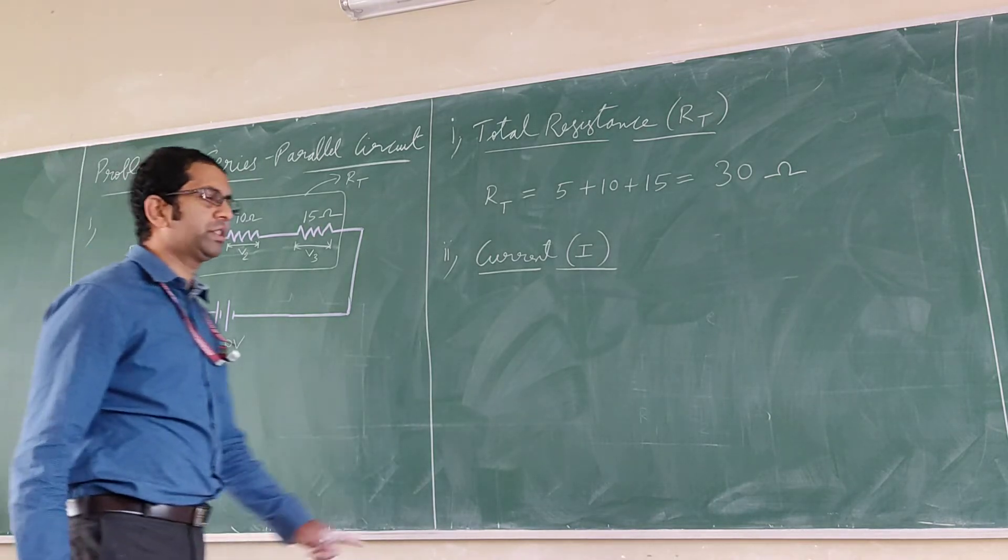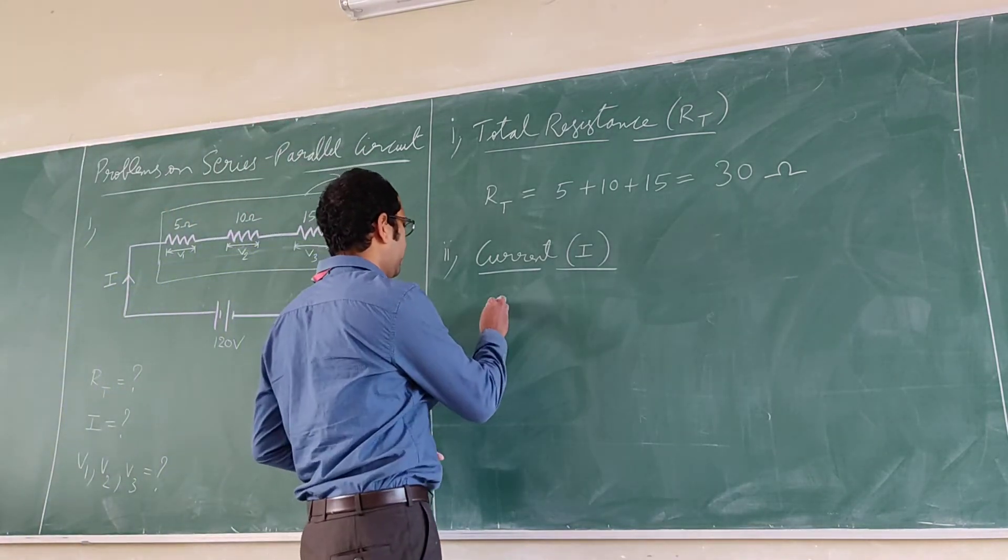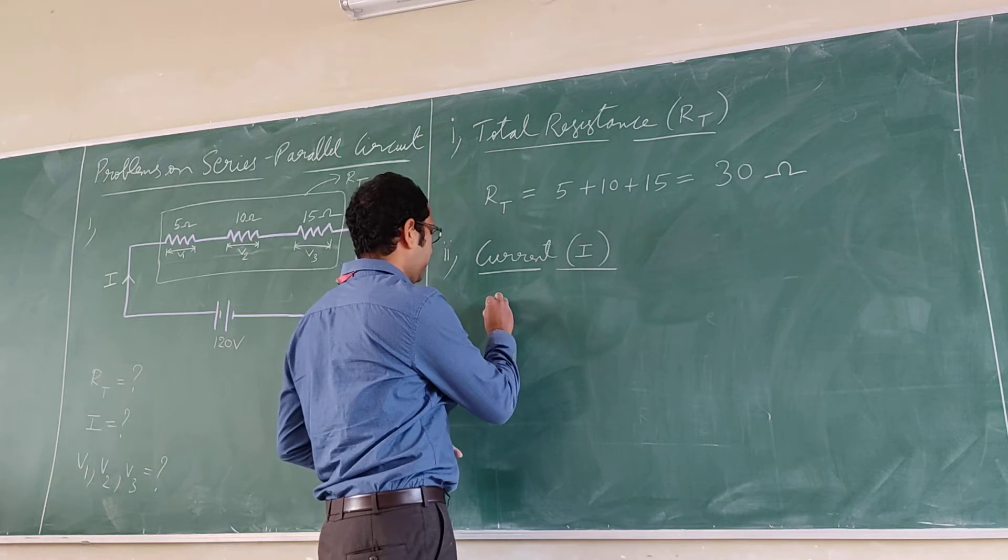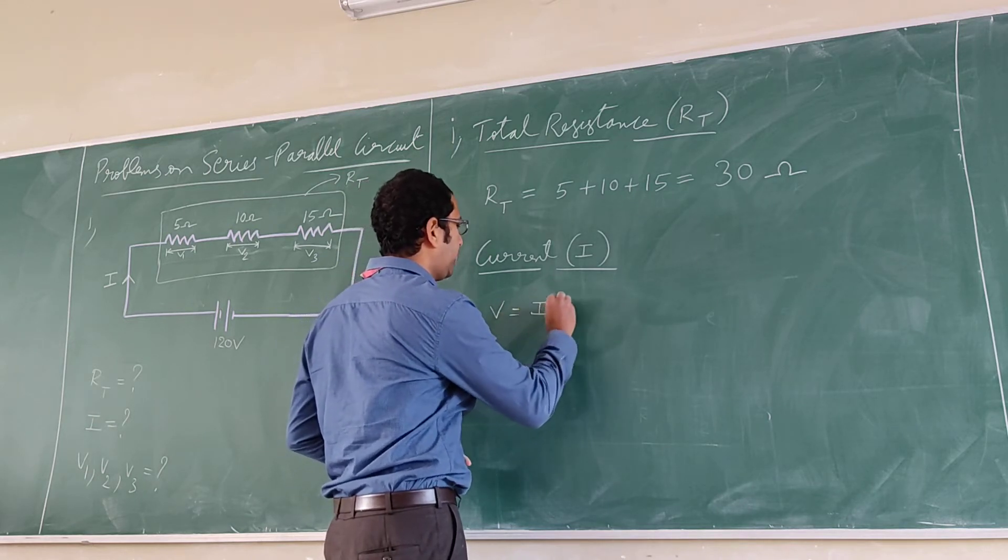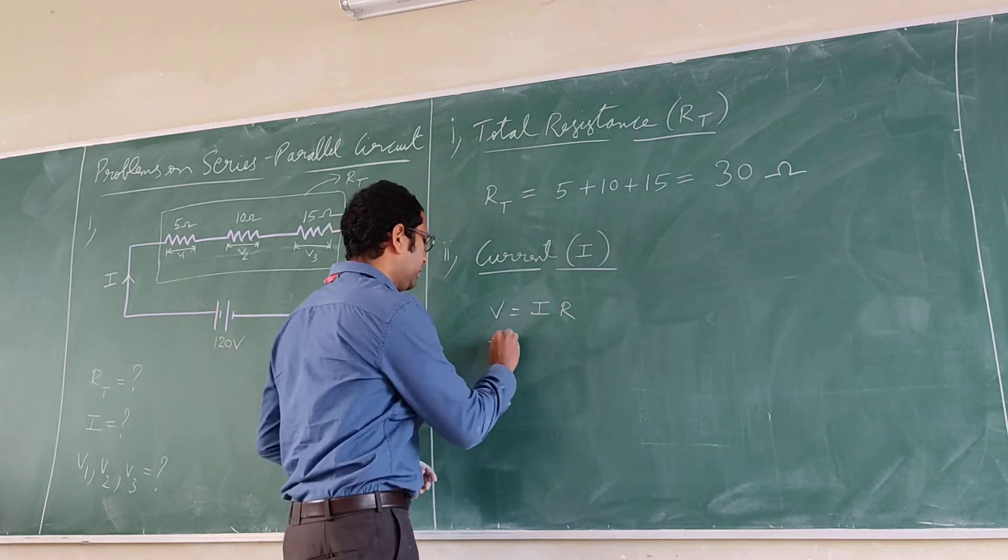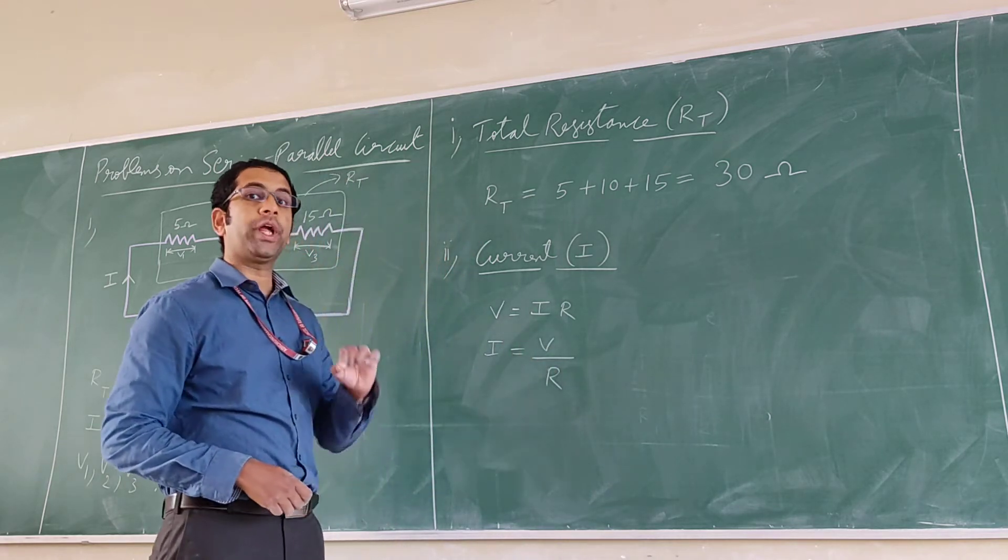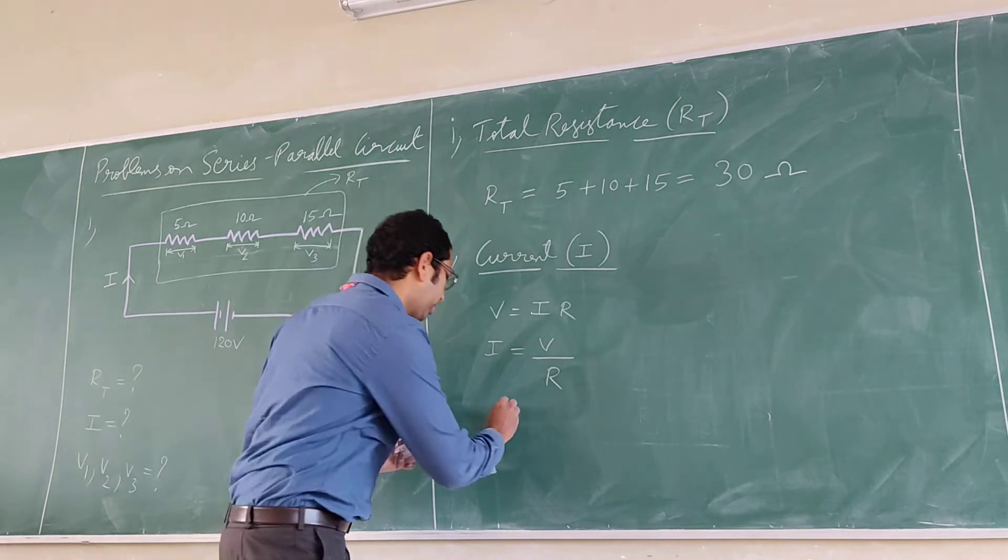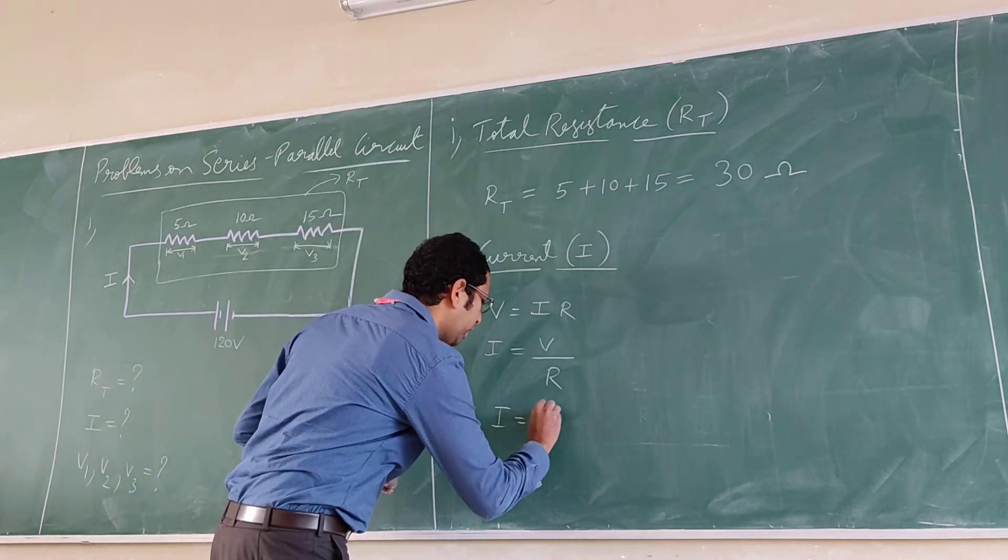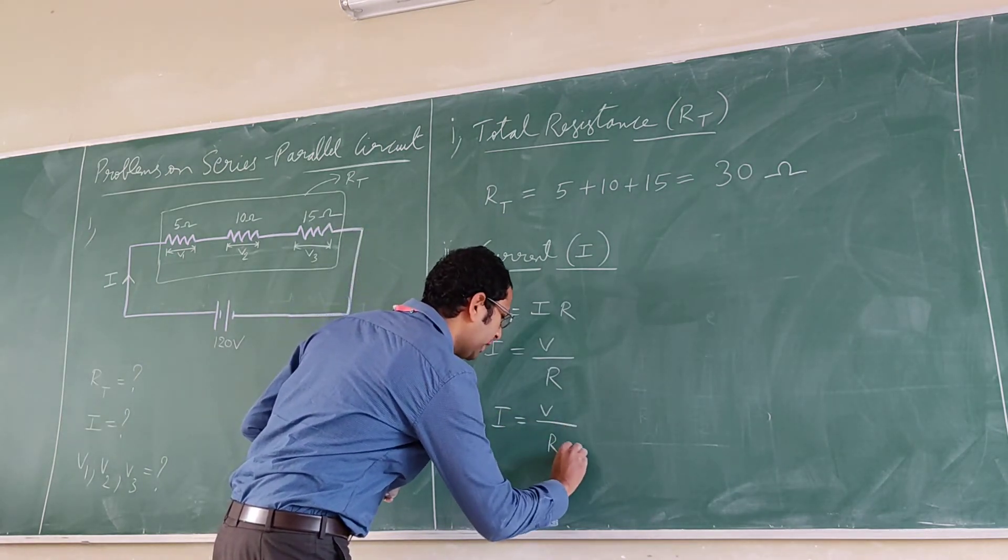So the second thing that we are going to find is current. You know V is equal to I times R, or I is equal to V by R. Here instead of R we are going to take total resistance, so that will be I is equal to V by R suffix t.